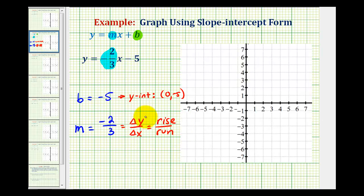So from this information, we can now graph the line. We'll plot the y-intercept first, which is negative 5 here. And then we'll use the slope to find additional points. Since our slope is negative 2 over 3, from our y-intercept we're going to go down 2 units and then right 3 units to determine another point on the line.